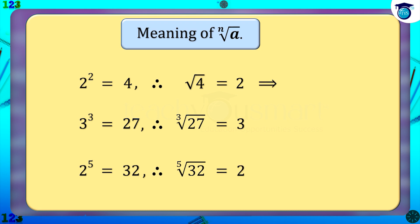Also, we can represent it as: four raised to one by two equals two, twenty-seven raised to one by three equals three, and thirty-two raised to one by five equals two.